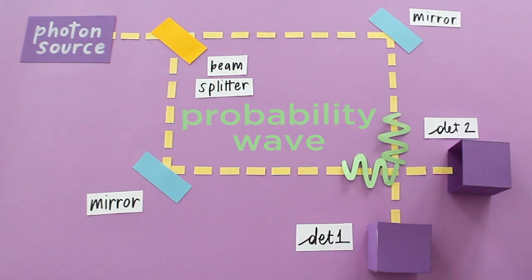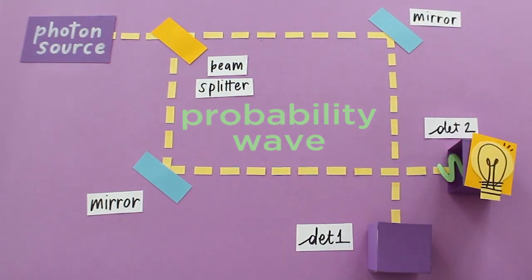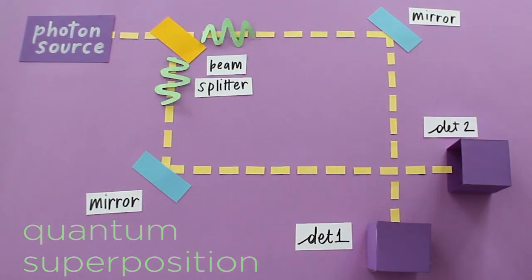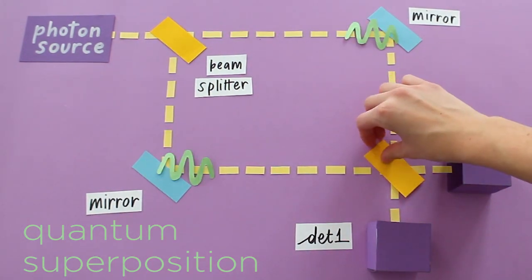and the photon becomes localized in a point. After entering the interferometer, the wave function is a superposition of two states, corresponding to the photon taking both paths at the same time.